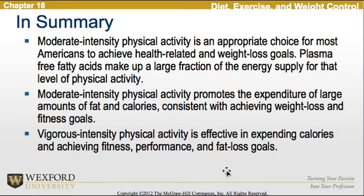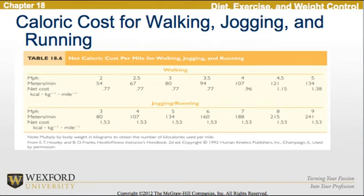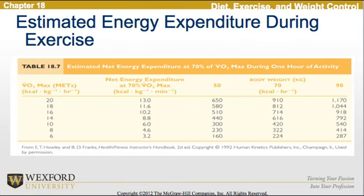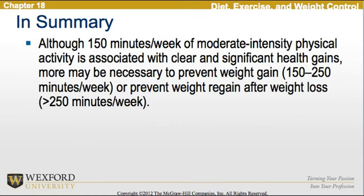Vigorous intensity physical activity is effective in expending calories and achieving fitness, performance, and weight loss goals. Table 18.6 shows the caloric costs for walking, jogging, and running. Table 18.7 shows the estimated energy expenditure during exercise. Although 150 minutes per week of moderate intensity physical activity is associated with clear and significant health gains, more may be necessary to prevent weight gain at approximately 150 to 250 minutes per week, or to prevent weight regain after weight loss at greater than 250 minutes per week. That concludes the content from Chapter 18.